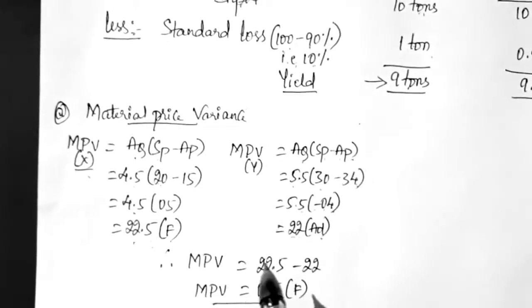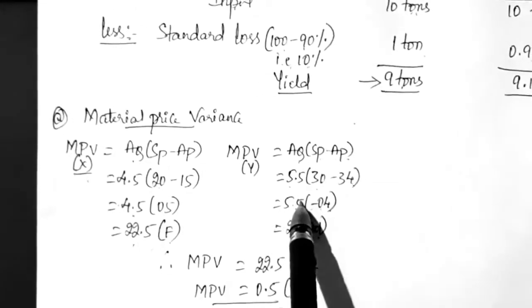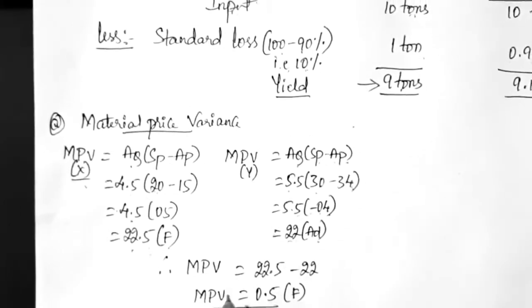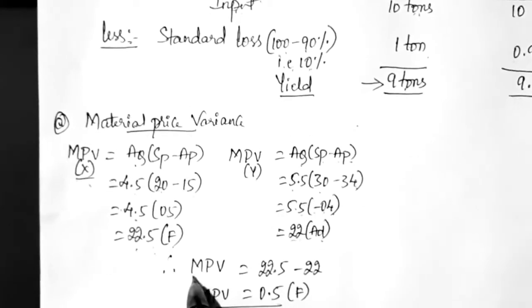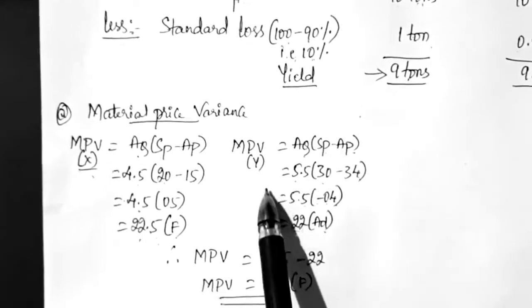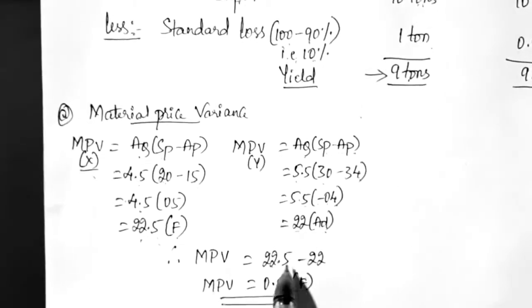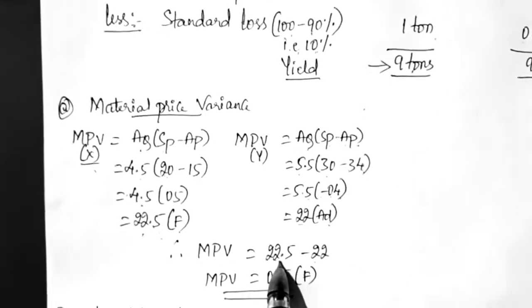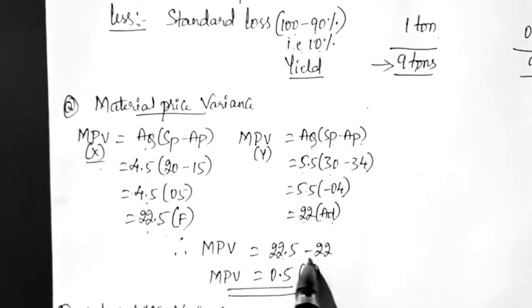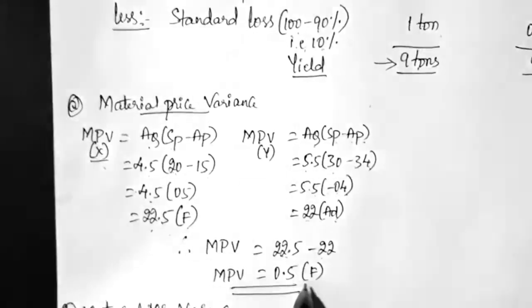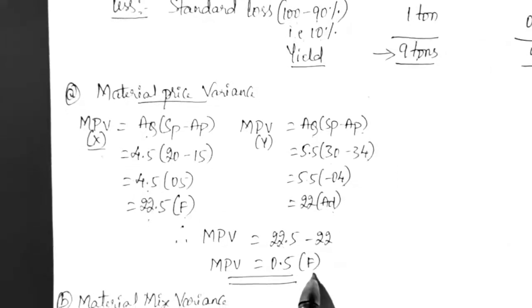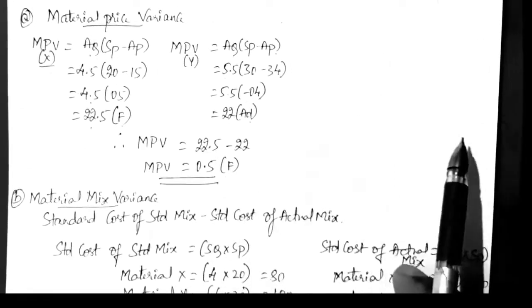Total material price variance for X and Y combined: 22.5 favorable minus 22 adverse gives 0.5 favorable balance. Since it is a positive number, we quote it as favorable.